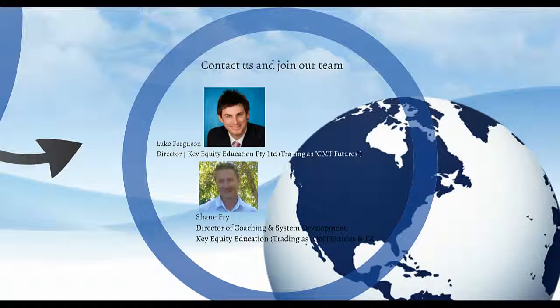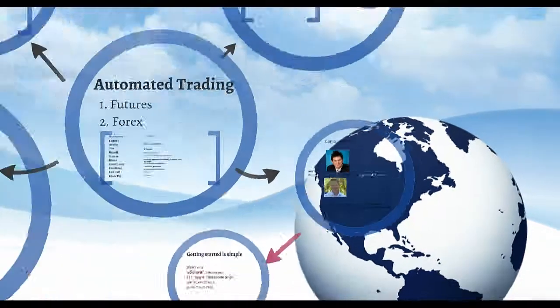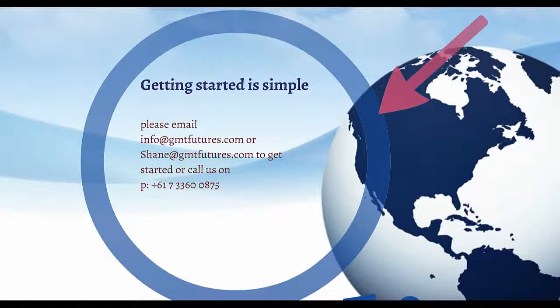Thanks for spending time with us today. If you'd like more information on how to become a GMT Futures and FX Automated System Trader, it's very simple. All you need to do is send us an email at info@gmtfutures.com, or you can email me at shane@gmtfutures.com. Alternatively, you can give us a call on 617-333-600875. We're happy to have a chat about our systems. Stick around — we're going to preview more videos and do an update on our stats for May and how our multi-systems and single systems have performed this month.